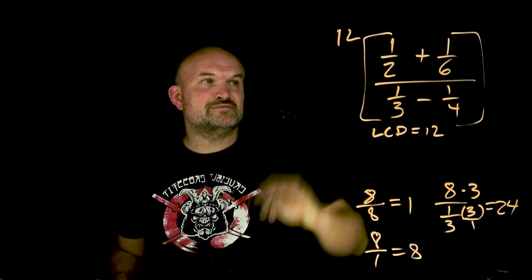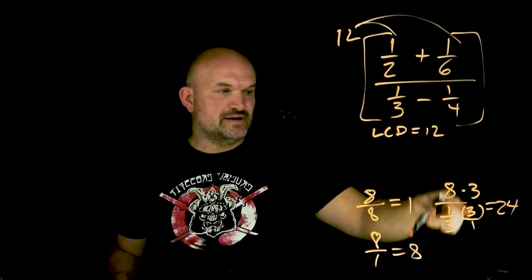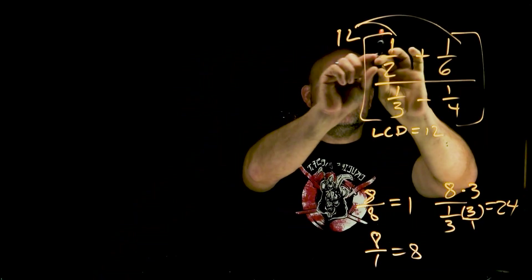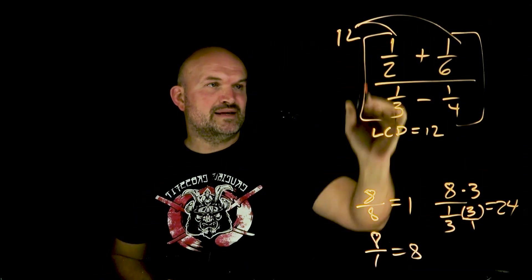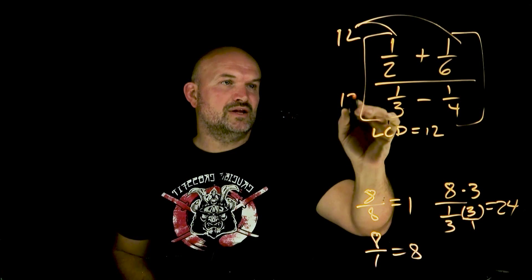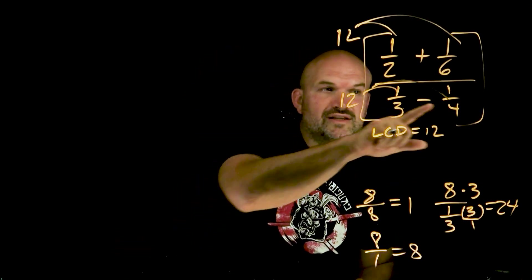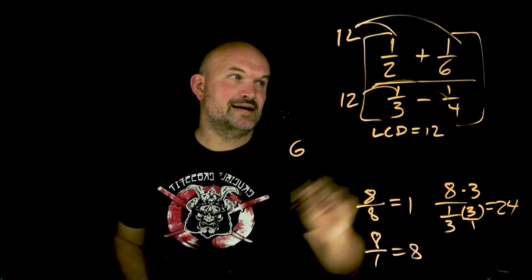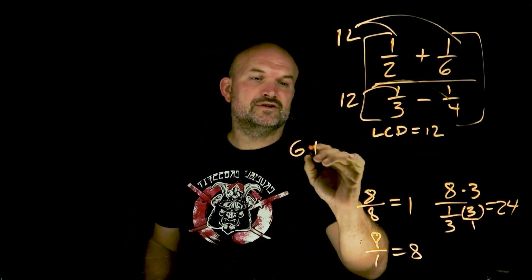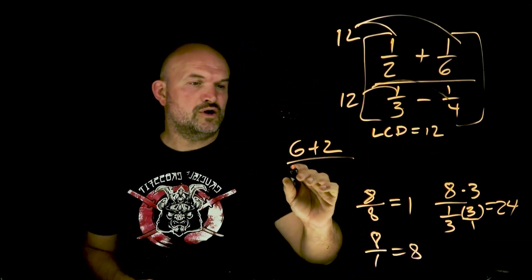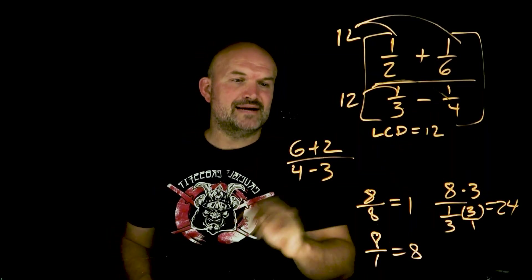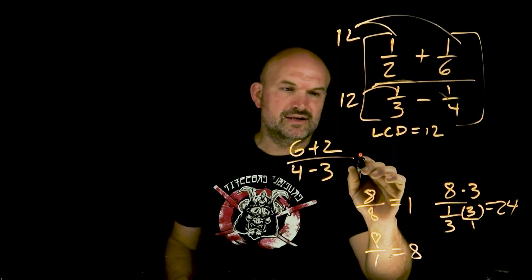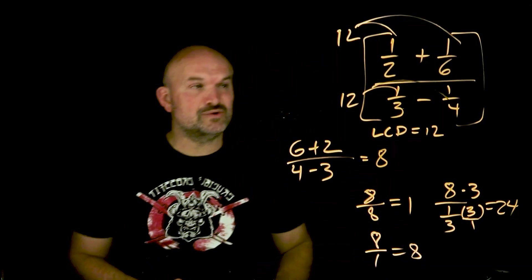So if I multiply everything times 12 — and again, everything — because whatever you do in the denominator, you have to do to the numerator. If your terms are separated by addition, you've got to make sure you distribute. So I'm going to multiply this 12 on the top as well as on the denominator. All of these denominators evenly divide into 12: 2 divides into 12 six times, 6 divides into 12 two times, 3 divides into 12 four times, and 4 divides into 12 three times. 6 plus 2 is going to be 8, 4 minus 3 is going to be 1. So my final answer in this case is going to be 8.